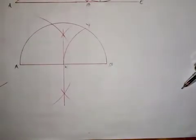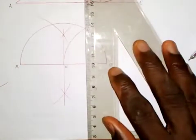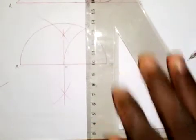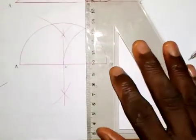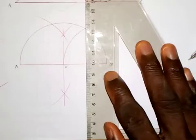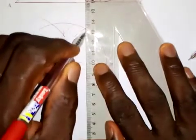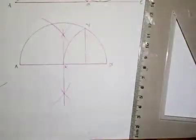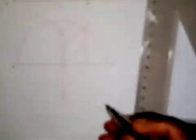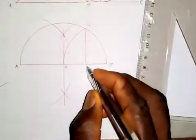The next thing to do is to draw a vertical line from Y down to line AB. This vertical line meets line AB at a point, which I will call point Z.